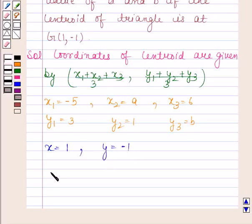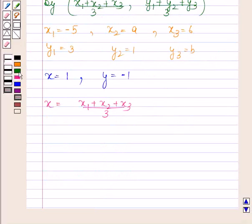Now we know that the x coordinate of the centroid is (x1+x2+x3)/3. Here x=1, x1=-5, x2=a, x3=6 divided by 3. This implies 3=a+1 and this implies a=2.